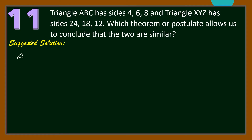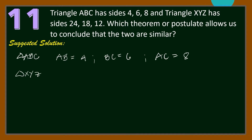For triangle ABC, let AB equal 4, BC equal 6, and AC equal 8. Then for triangle XYZ, let XY be the shortest side, that is 12. YZ equals 18, and XZ equals 24.